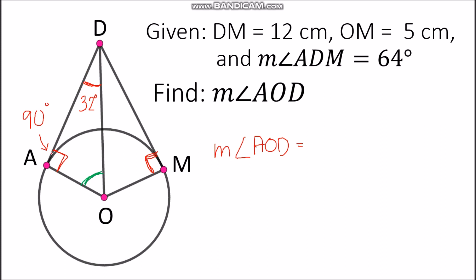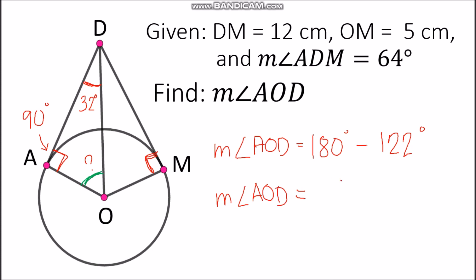To find the measurement of angle AOD, notice there is a triangle with two known angles: 32 degrees and 90 degrees. We add these and subtract from 180 degrees: 180 minus (90 plus 32) equals 180 minus 122, which gives us angle AOD equals 58 degrees.